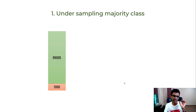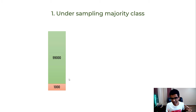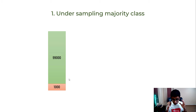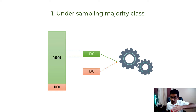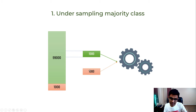The first technique to handle imbalance is under-sampling the majority class. Say you have 99,000 samples in one class (green, non-fraud) and 1,000 in another (red, fraud). You can randomly pick 1,000 samples from the 99,000, discard the rest, combine with the 1,000 red samples, and train your model. But this is not the best approach because you're throwing away so much data.